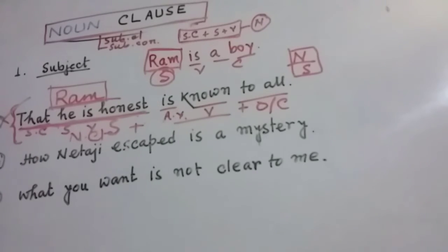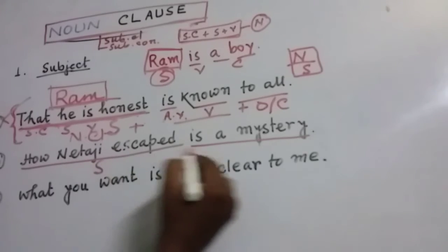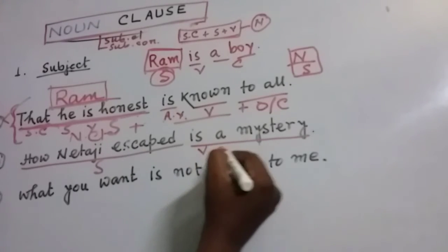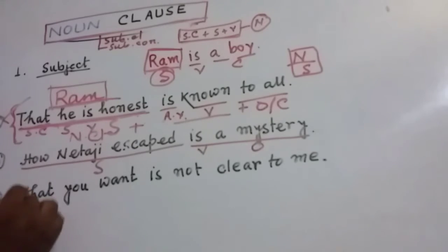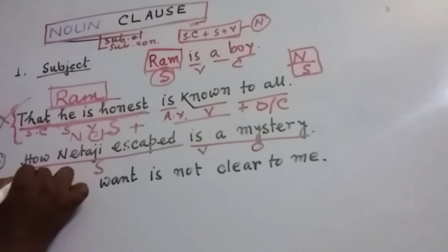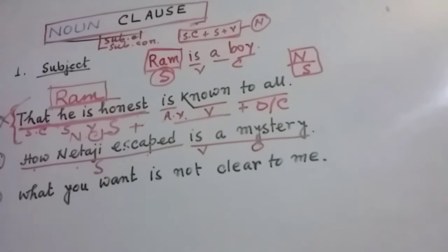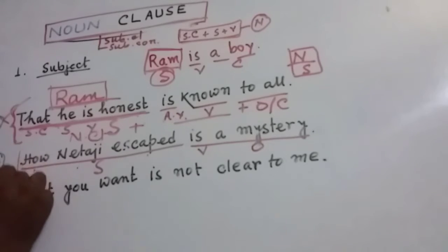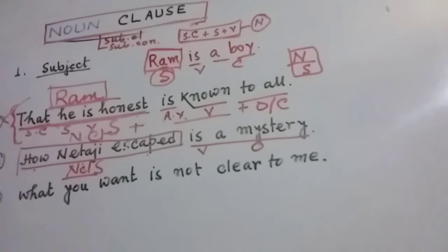Next, in the sentence 'How Netaji escaped is a mystery,' this group of words 'how Netaji escaped' is the subject. There is a subordinating conjunction, a subject, and a finite verb — so obviously it's a clause. And since this clause is used as the subject of the sentence, it is a noun clause. You can also try replacing this group of words with a single noun and you will get the same result.